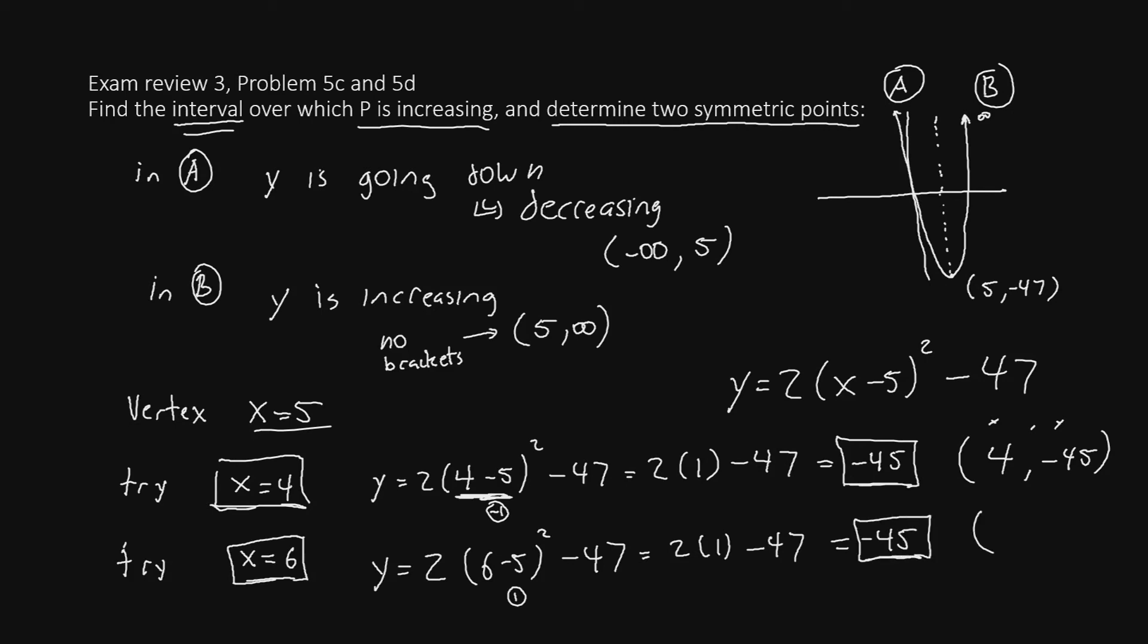Again, our answer is going to be x comma y. The x we used this time was 6. And the y we ended up with is still negative 45. So these two points we came up with here, 4 negative 45 and 6 negative 45, are our symmetric points.